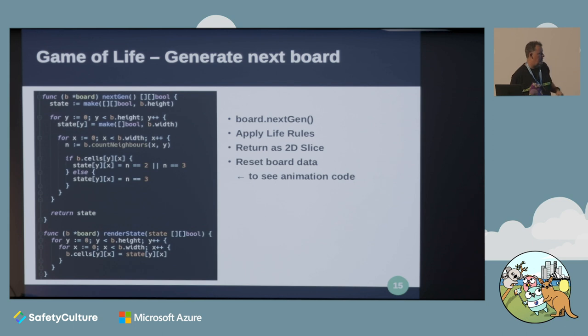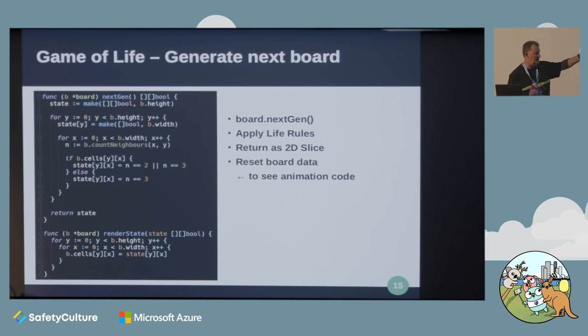A little bit of code there shows what we're doing internally to take the current data set on the board and generate the next frame in the Game of Life program. It's just looping through X, Y coordinates - if there are two or three neighbour cells that are populated, that cell stays alive; otherwise it clears. Then we just set that into the buffer.